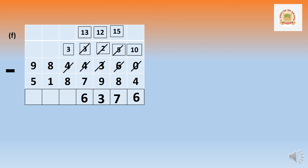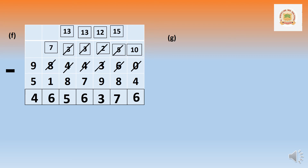Thirty thousand cannot minus 80 thousand. So we borrow from the lakh number — 8 lakh gives 1 lakh to 30 thousand, becoming 130 thousand, and 8 lakh becomes 7 lakh. Thirteen minus 8 equals 5. After giving, 7 lakh minus 1 lakh: 7 minus 1 equals 6. Last digits: 90 lakh minus 50 lakh — 9 minus 5 equals 4. Answer is 46,56,376.